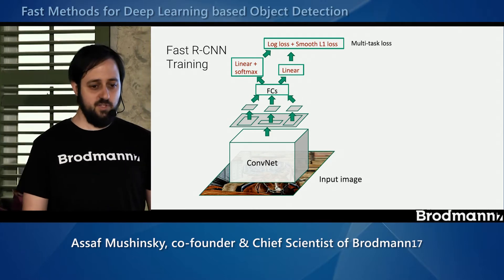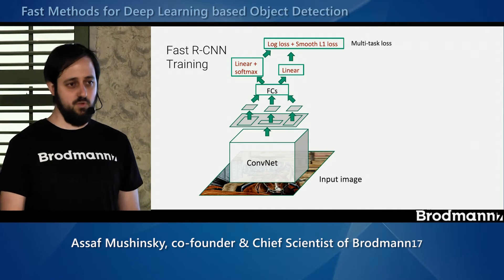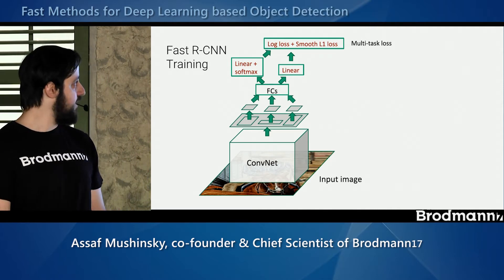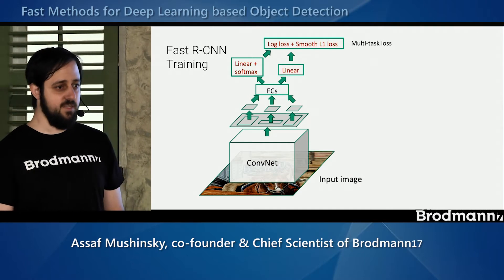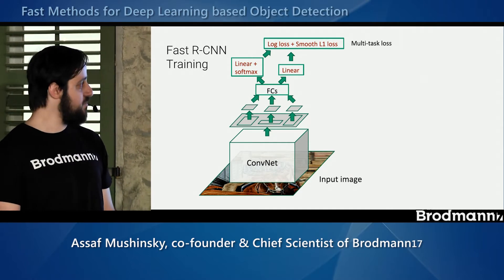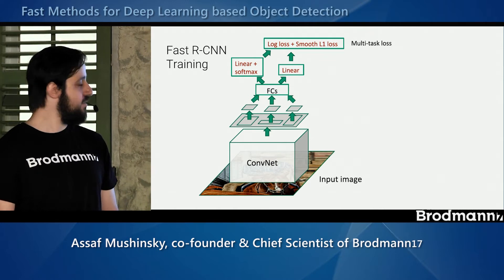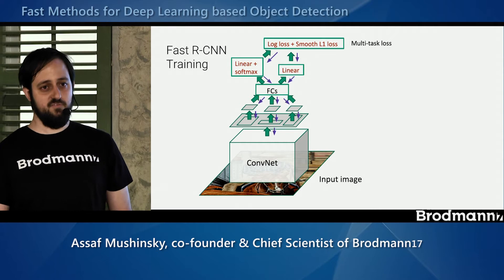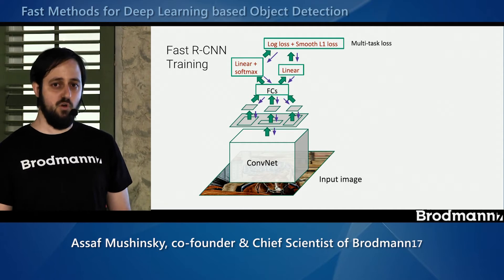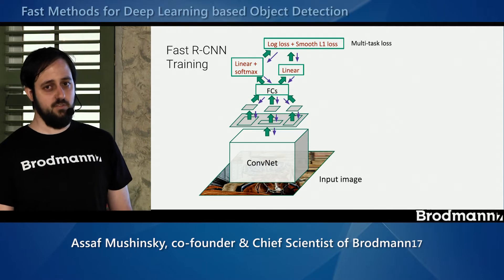In the training phase, we can combine all of these outputs into a single loss — adding a log loss for classification and L2 loss for the regression, summing both of them. This allows us to train the entire model together. The real advantage is that we can back-propagate through this model, training the whole model jointly rather than in separate steps as before.